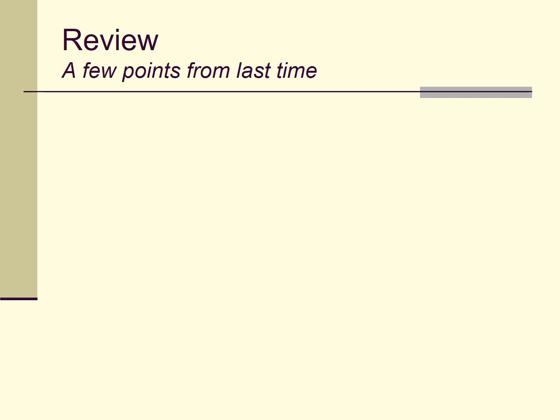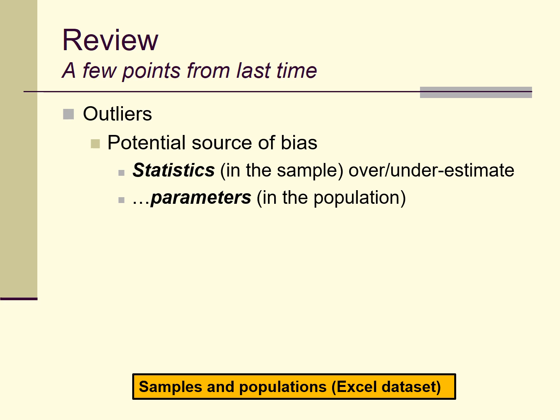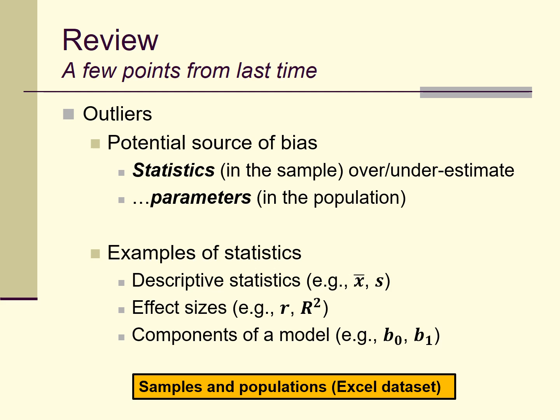Before getting into the main part of the lecture, I want to touch on a point I made last time by way of a quick review. That point concerned outliers, and last time I tried to make the case that outliers are a potential source of bias. They can lead the calculations we make in our sample of data — the statistics that we compute — to misrepresent, to over- or underestimate values in the population of all data, which are parameters.